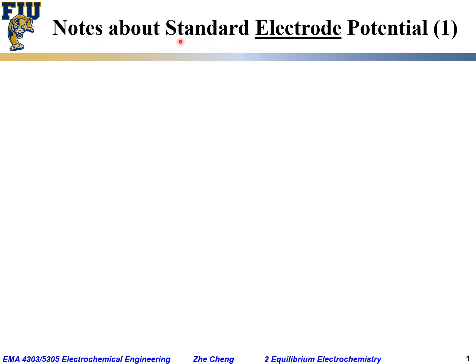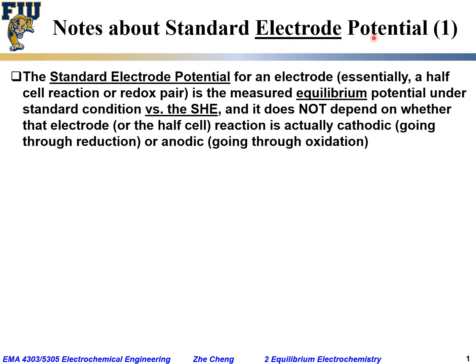I would like to make a few notes here about standard electrode potential. The standard electrode potential for a given electrode — essentially a particular half-cell reaction or redox pair — is the measured equilibrium potential under standard conditions versus SHE, or standard hydrogen electrode.